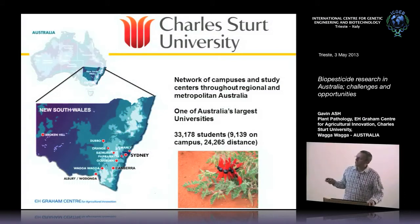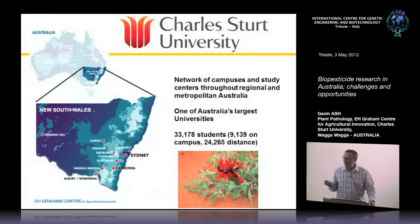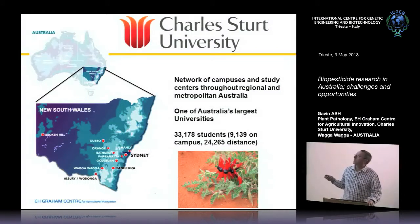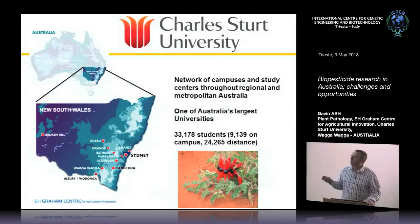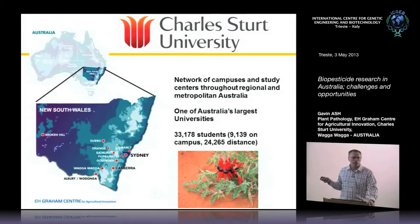Our university has a number of campuses, from the southern border through to Dubbo and out to Broken Hill — about eight hours by car across. The university is called Charles Sturt University because it's named after an explorer, Charles Sturt, an Englishman who opened up much of this territory. He has a flower named after him — the Desert Pea, Charles Sturt's Desert Pea.